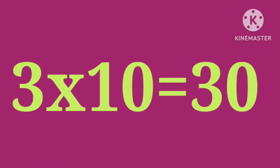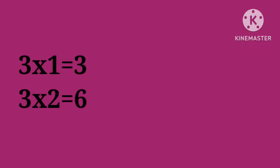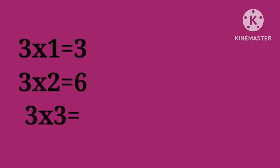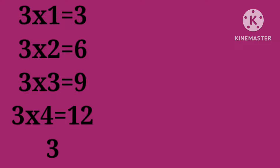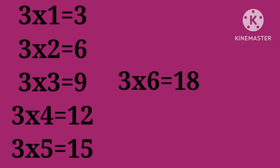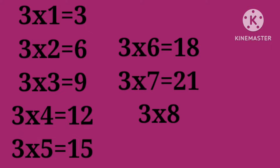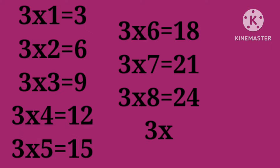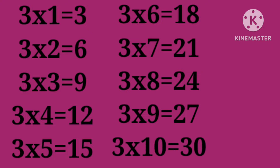Three tens are thirty. Three ones are three. Three twos are six. Three threes are nine. Three fours are twelve. Three fives are fifteen. Three sixes are eighteen. Three sevens are twenty-one. Three eights are twenty-four. Three nines are twenty-seven. Three tens are thirty.